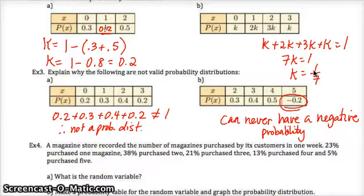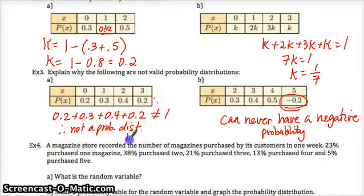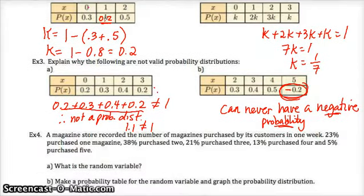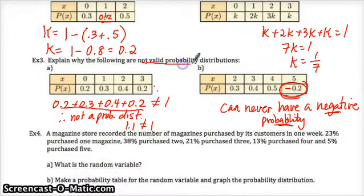For 3A, it says: explain why the following are not valid probability distributions. Well, for A, they're not valid because those four probabilities have a sum greater than 1. You can never have that sum be greater than 1. For letter B, hopefully you noticed this negative value right away — can you ever have a negative probability? No. So that's not possible, and therefore it was not a valid probability distribution.